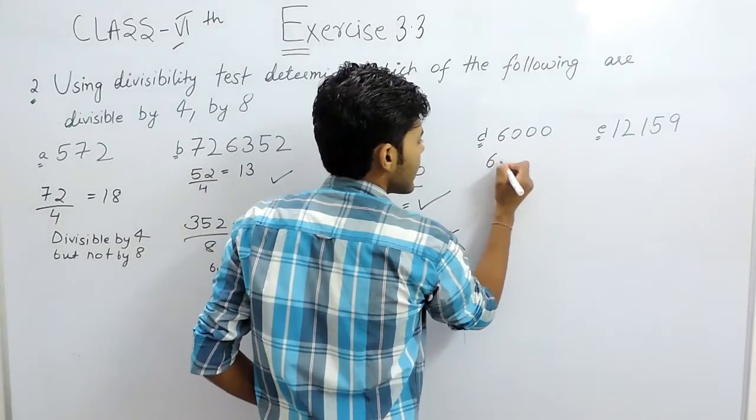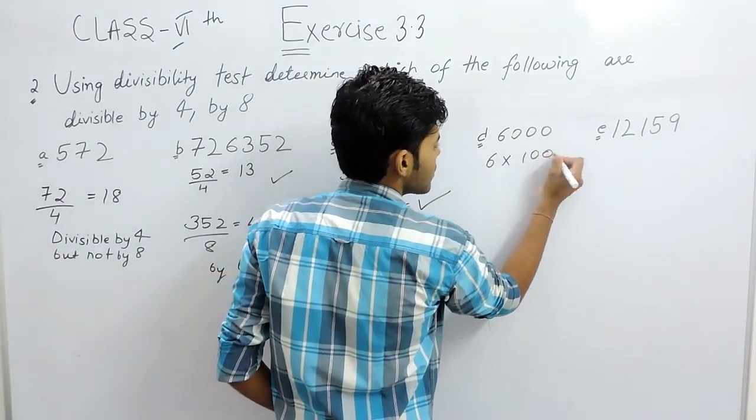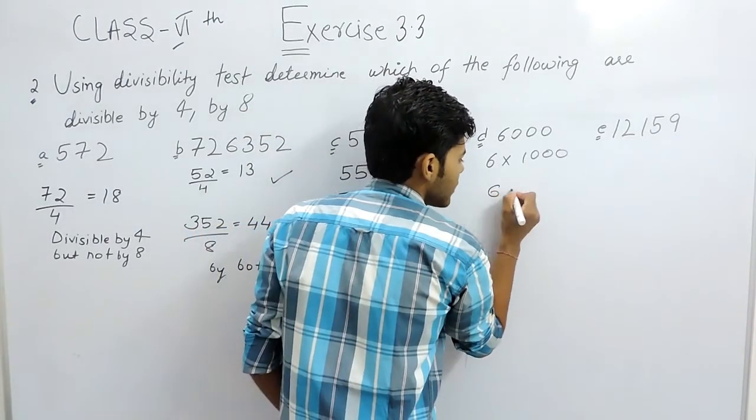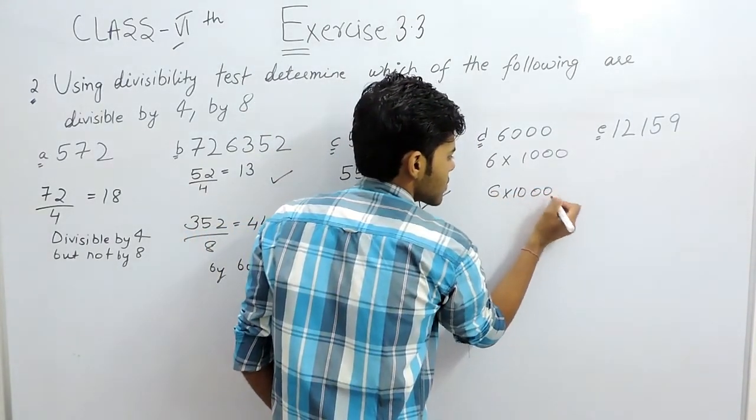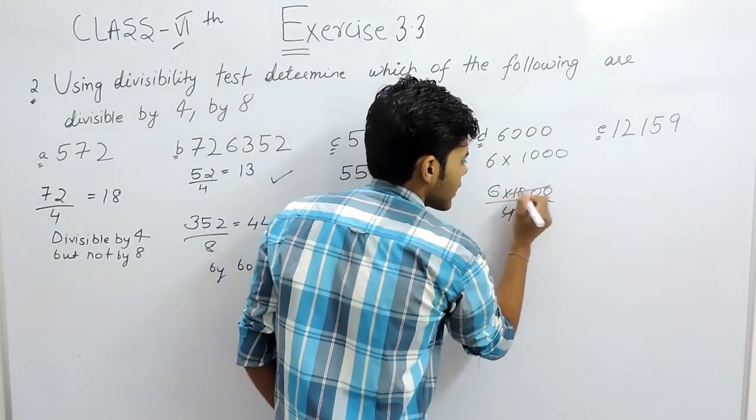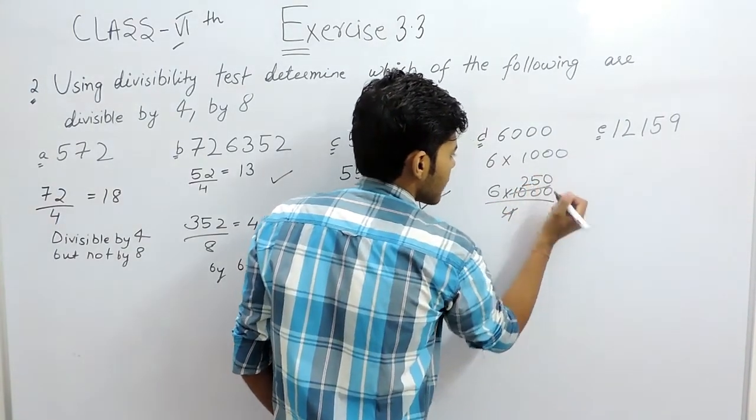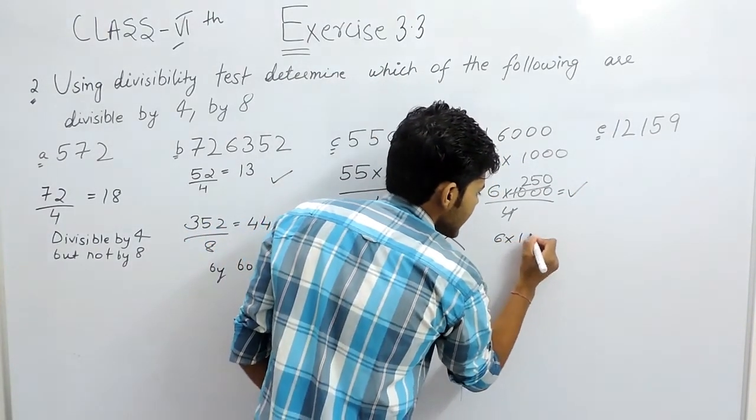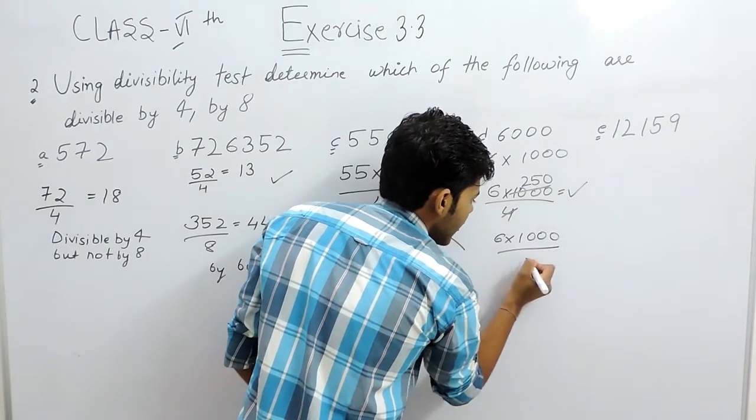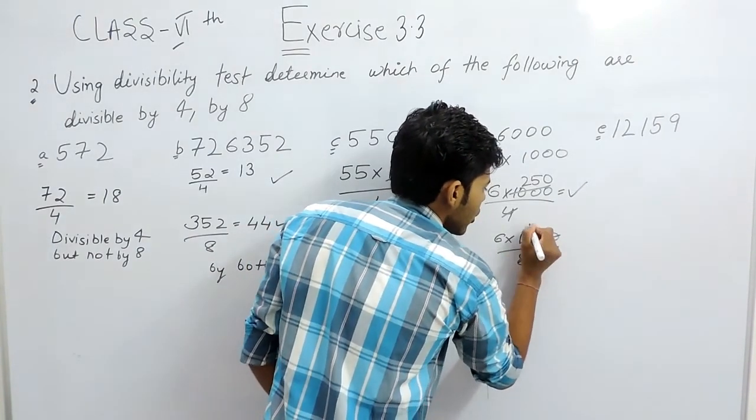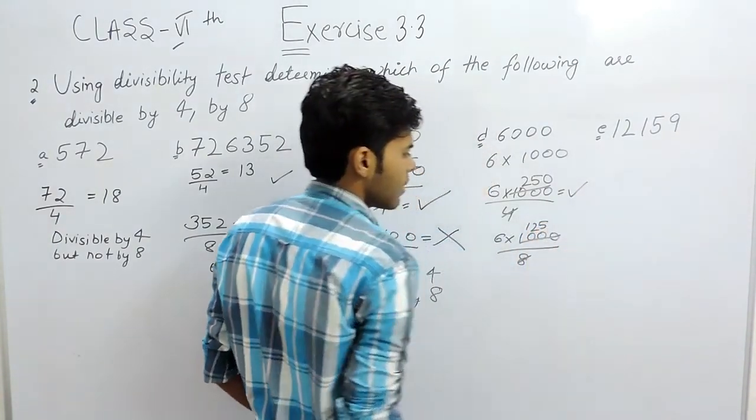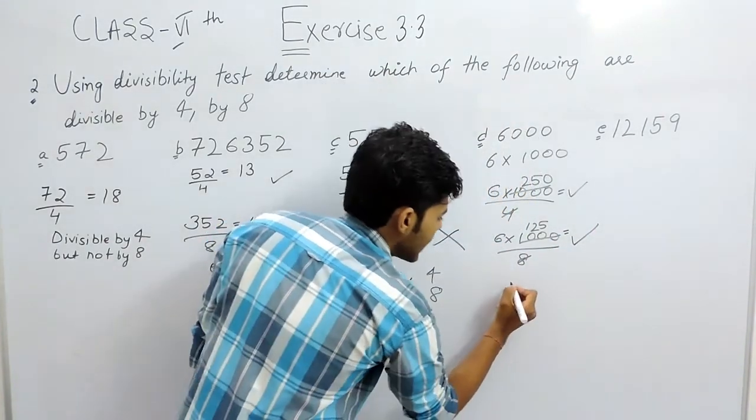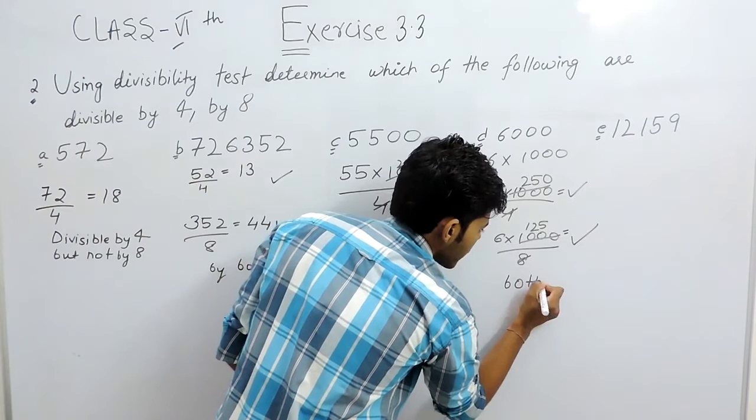Now in this part, 6000 can be written as 6 multiplied by 1000. Now 1000 can be divided by 4 completely, that is 250, means it will be divided by 4 completely. And 6 into 1000 upon 8 also cuts 1000 into 125 times, so it will also be divisible by 8 completely. So both will divide.